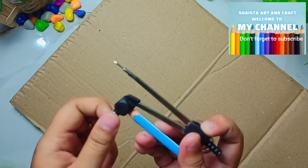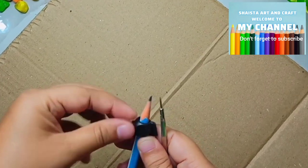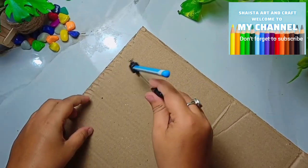First of all, we will take a cardboard sheet. With the help of the compass, we will make a small piece and a big size circle. As I have made, you have to follow the same way.